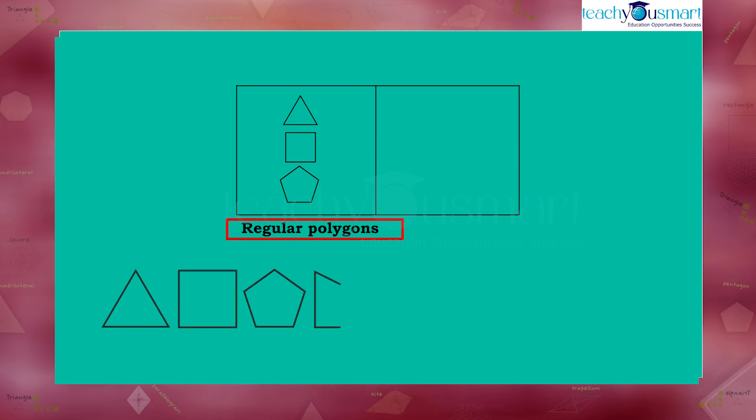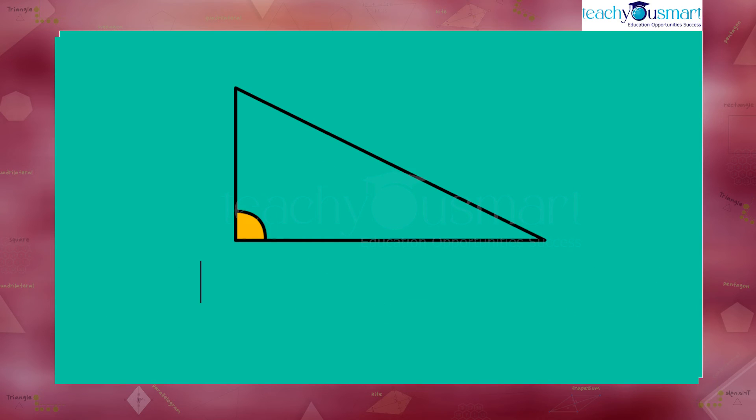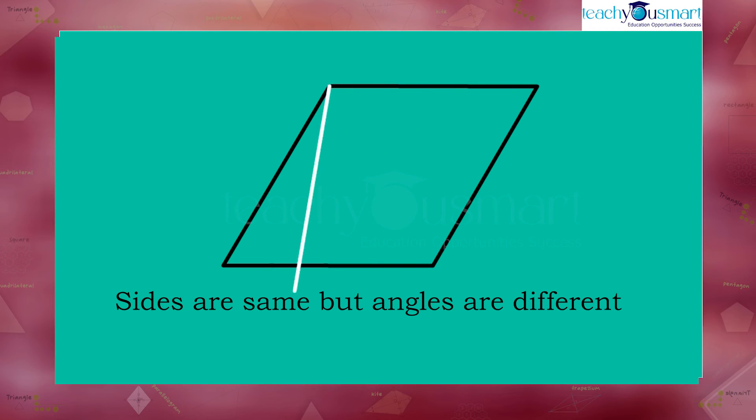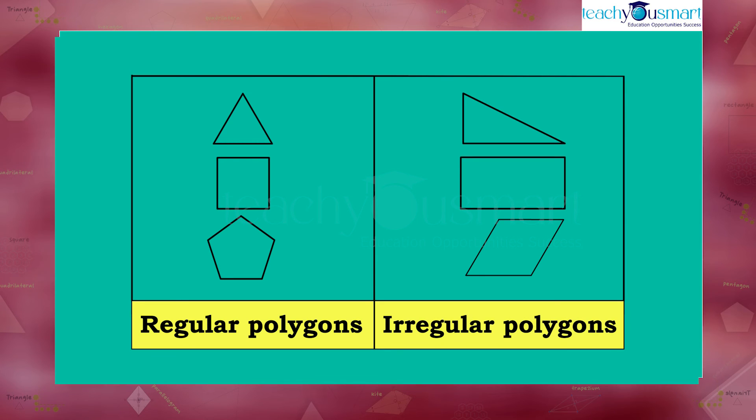Now let's check the sides and angles of other polygons. In the first figure, angles and sides are different. In the second figure, the angles are the same but the sides are different. In the third figure, the sides are the same but the angles are different. So these polygons are called irregular polygons.